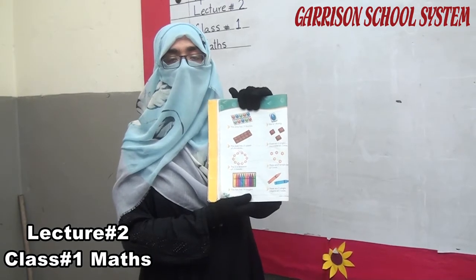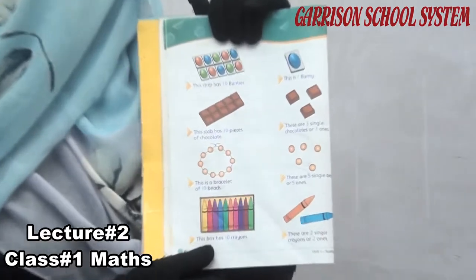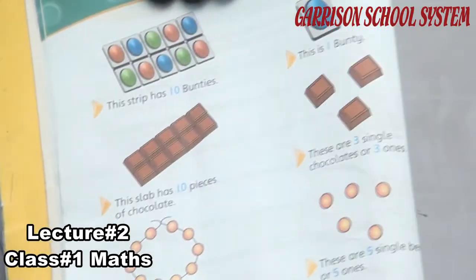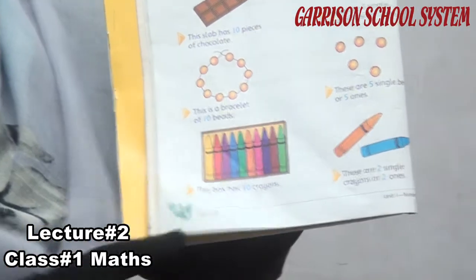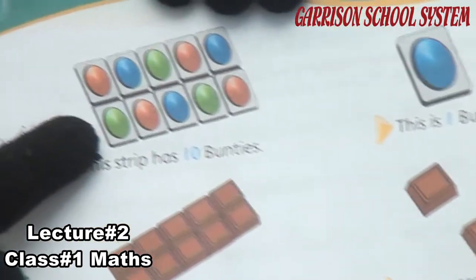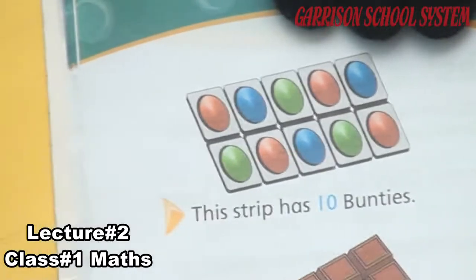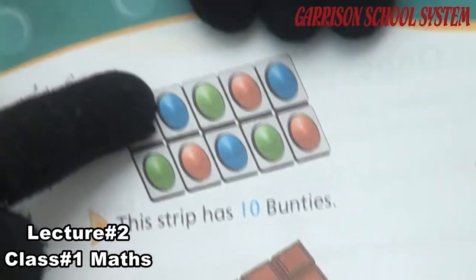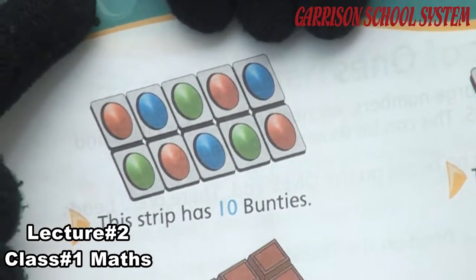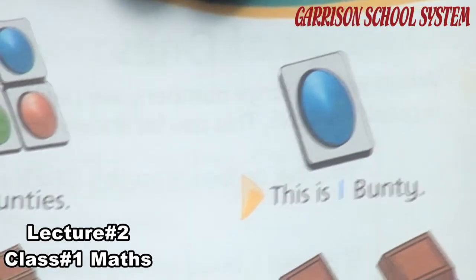Okay students, I will explain ones and tens according to pictures to make it clear. Look at my book, page number 8. First, this group has ten bundles. How many? Ten bundles. And what is the meaning of ten bundles? We have two numbers — one, zero, ten. So we write it in tens. And this is one bundle — a single number, and it is called ones.